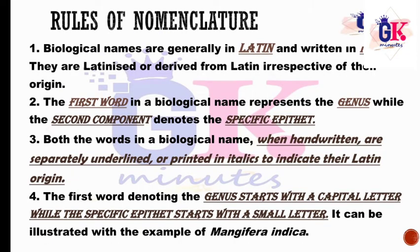Biological names are generally in Latin and written in italics. They are Latinized or derived from Latin irrespective of their origin. Every time a new organism or plant is discovered, it must be given a Latin scientific name. The first word in a biological name represents the genus, while the second component denotes the specific epithet.